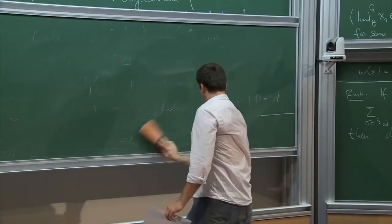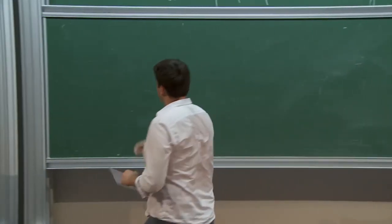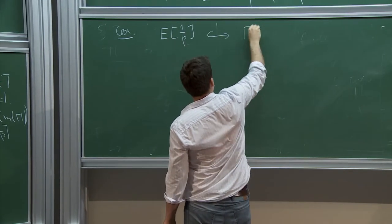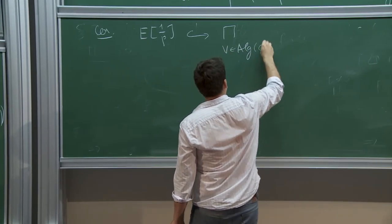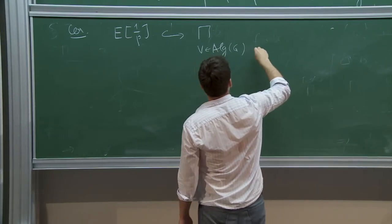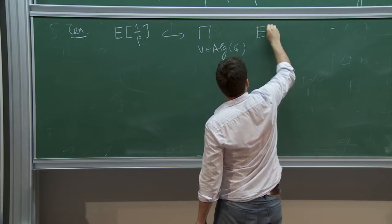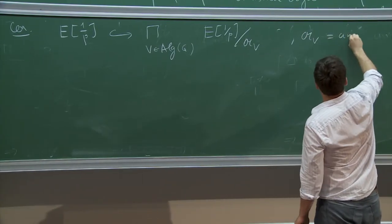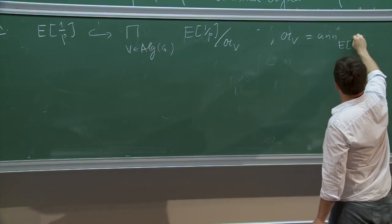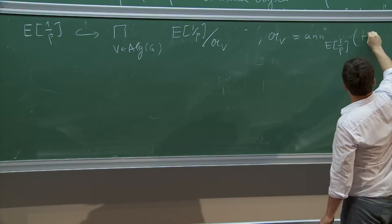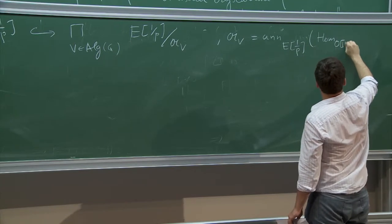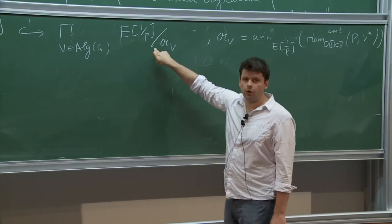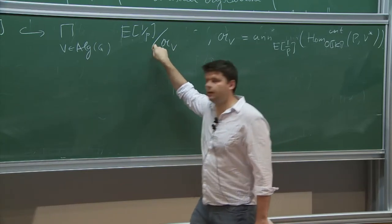As a corollary of step one, you deduce that this ring injects into a product over algebraic representations V of E[1/p] / A_V, where A_V is the annihilator of the module Hom_{OK}^{cont}(P, V∨). If I can show that every single such quotient ring is commutative, then I can conclude that E[1/p] is commutative.